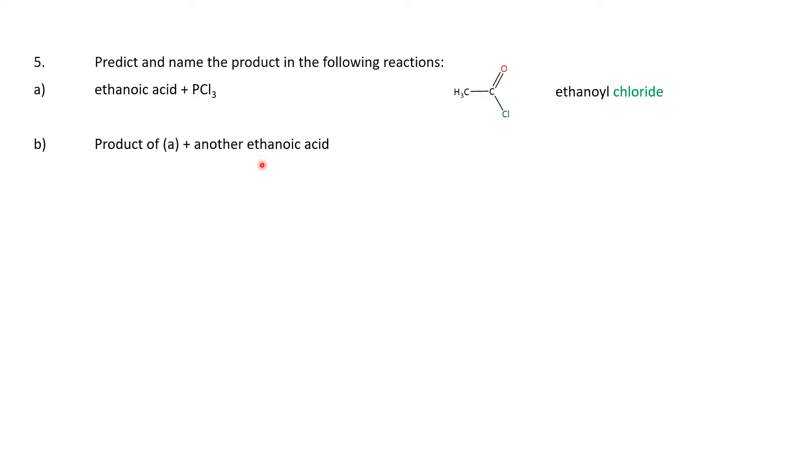Product of this plus another ethanoic acid. Well, an acid chloride plus an acid group is going to make an acid anhydride. So we're just going to have here's the CH3C double bond O, react it with another ethanoic acid, making that. Plus of course HCl is lost when you make the anhydride. Both parts of the anhydride come from ethanoic acid, so it's ethanoic anhydride.